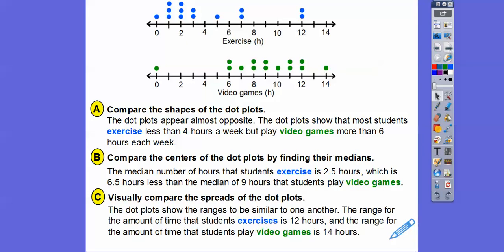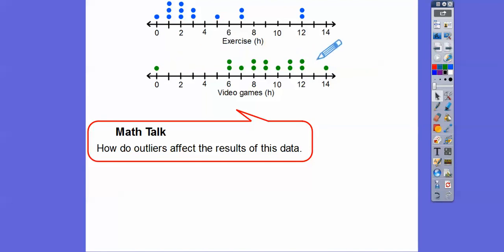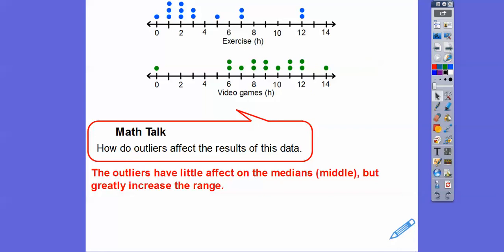For the spreads: the dot plots show the ranges are similar to one another. The exercise range goes from 0 to 12, so the range is 12. The video games range goes from 0 to 14, so the range is 14. As for how outliers affect the results: the outlier would shorten the range significantly and also affect the mean, but it would have little effect on the median since the median is just the middle number of all values.